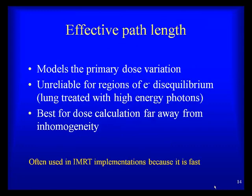Effective path length is one of the early methods for addressing inhomogeneities. It models the primary dose variation. However, it's unreliable for regions of electronic disequilibrium where density or atomic composition changes and the electron spectrum changes traversing from one medium to another. It usually gives poor results when the calculation point is far from the inhomogeneity. Because of its simplicity and speed, effective path length techniques have often been used in IMRT implementations and are still used as such.